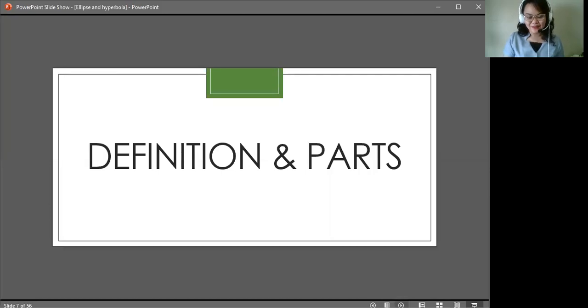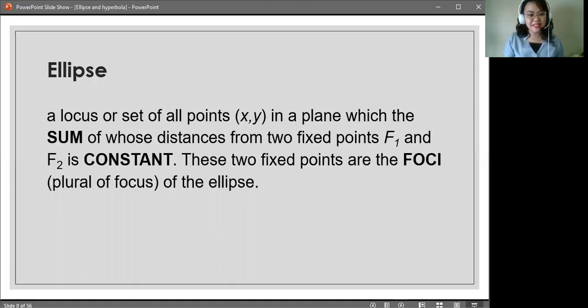Hi! In this video, we will be talking about the definition and parts of an ellipse. An ellipse is defined as a locus or set of all points in a plane which the sum of whose distances from two fixed points F1 and F2 is constant. The two fixed points are the foci, plural of focus, of the ellipse.